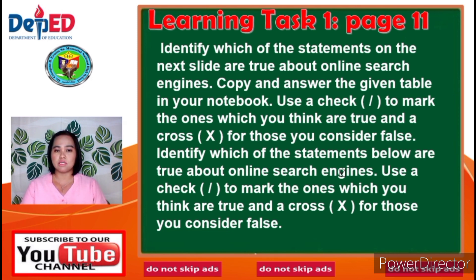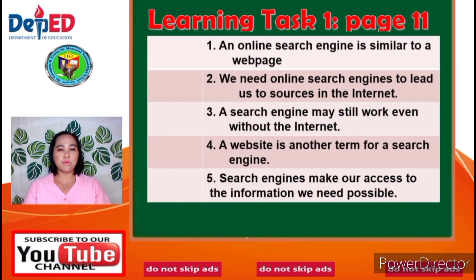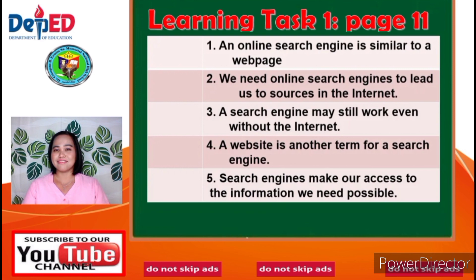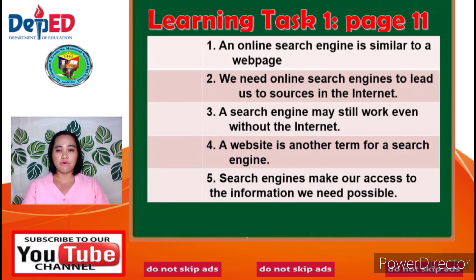Here are the answers. Number 1: An online search engine is similar to a web page — it is X (false). Number 2: We need online search engines to lead us to sources on the internet — it is Check (true). Number 3: A search engine may still work even without the internet — it is X (false). Number 4: A website is another term for a search engine — it is X (false). Number 5: Search engines make our access to the information we need possible — it is Check (true).